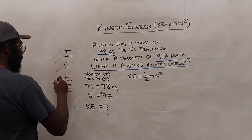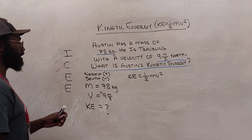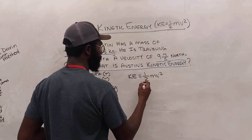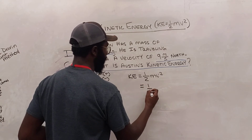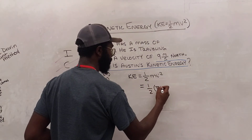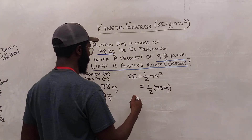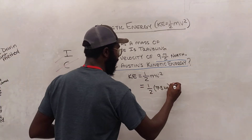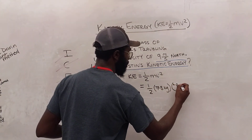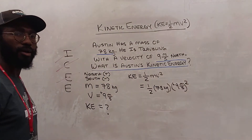Now we're going to evaluate. KE is equal to one-half times our mass of 78 kilograms, and our velocity, which is positive 9 meters per second, is going to be squared.